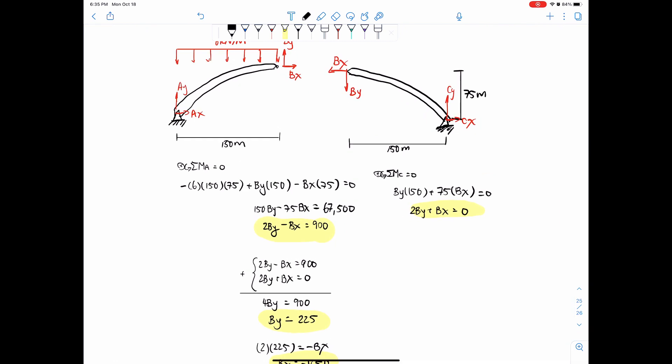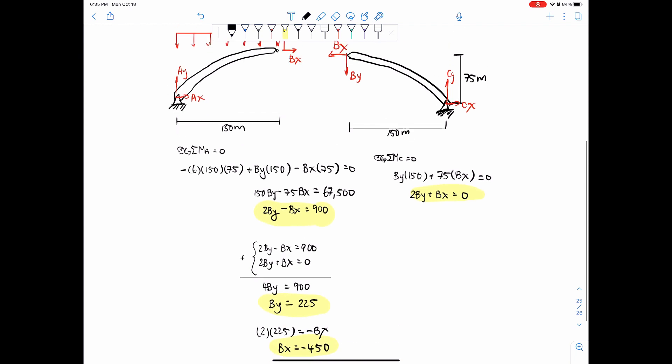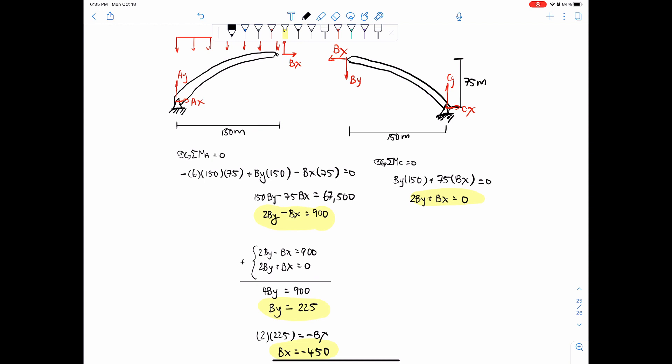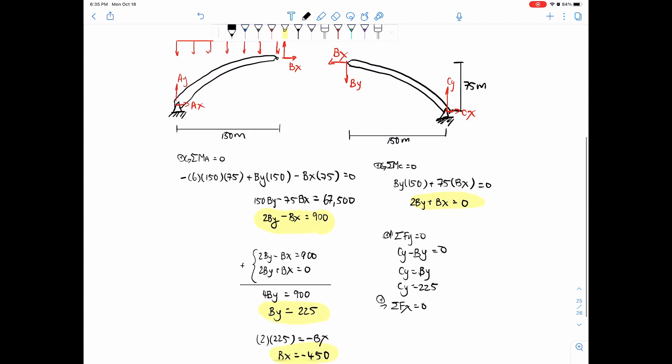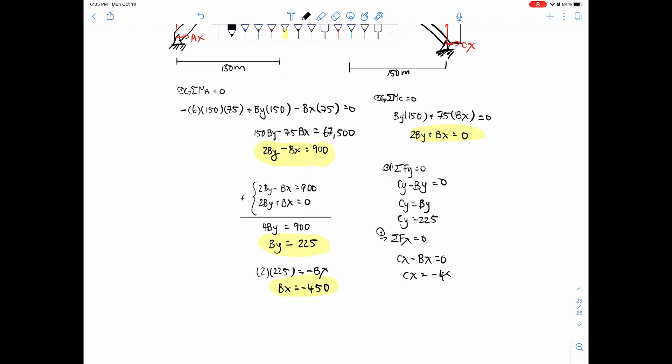So once we have that, we can just solve for CY and CX because it looks like to me that they're equal and opposite. So sum of forces in the Y direction, upwards is positive, and then we have CY because it's going up, minus BY equals 0. So CY equals BY, and then CY would just equal 225. And then sum of forces in the X direction, so this time horizontally, we have CX minus BX equals 0, and then CX would equal to BX, which equals negative 450. So that's your CY and CX value.